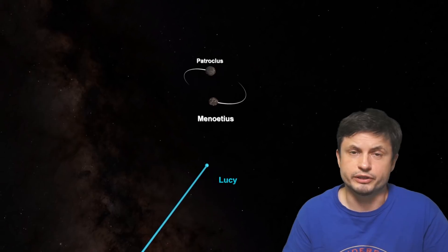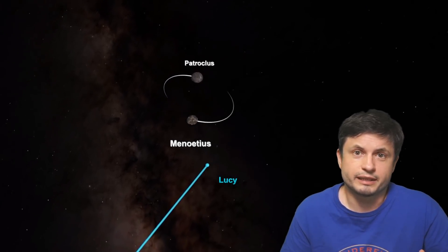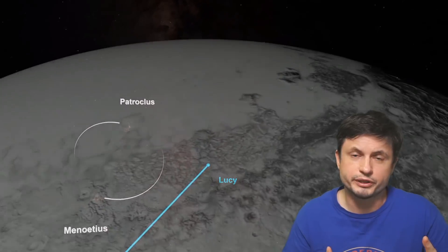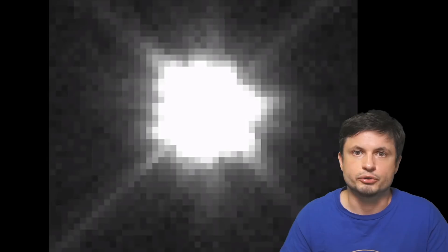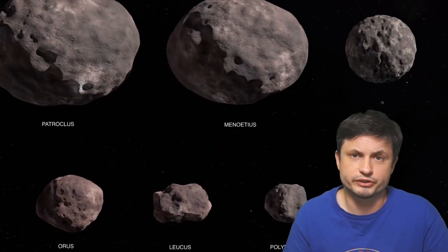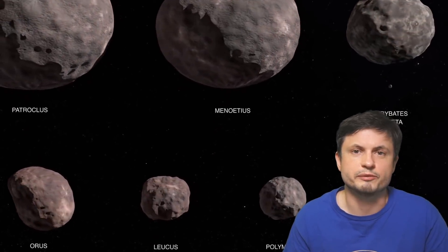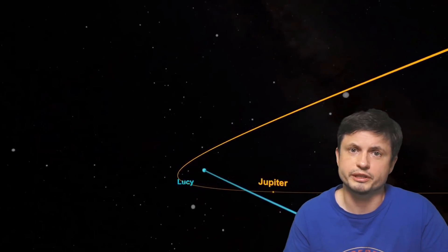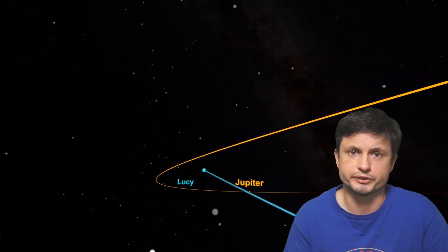But interestingly enough, after this, Lucy is actually going to be in a completely stable orbit, going between L4 and L5 points every six years. And so in theory, this mission can be extended for an extremely long time. So chances are, as long as the battery is still operational, and as long as the cameras are still working, a lot more objects are going to be visited, and a lot more pictures might come out that might help us discover even more secrets of the origin of the solar system.